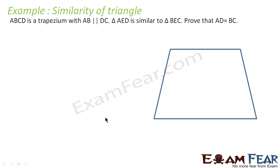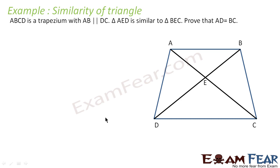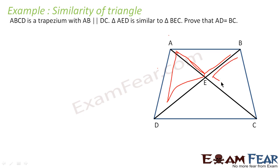So let's draw this trapezium where AB is parallel to DC. Let's write ABCD; AB is parallel to DC. AED is similar to BEC — let's draw triangle AED. Here AED is similar to BEC. We have to prove that AD is equal to BC. So how to approach this question: the first thing given is AED is similar to BEC.